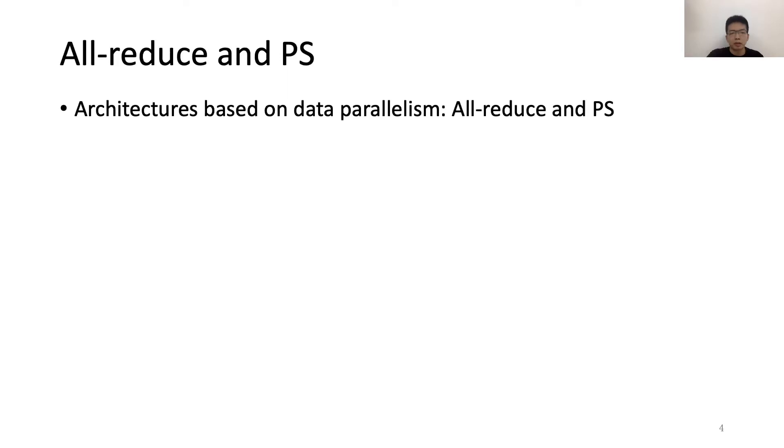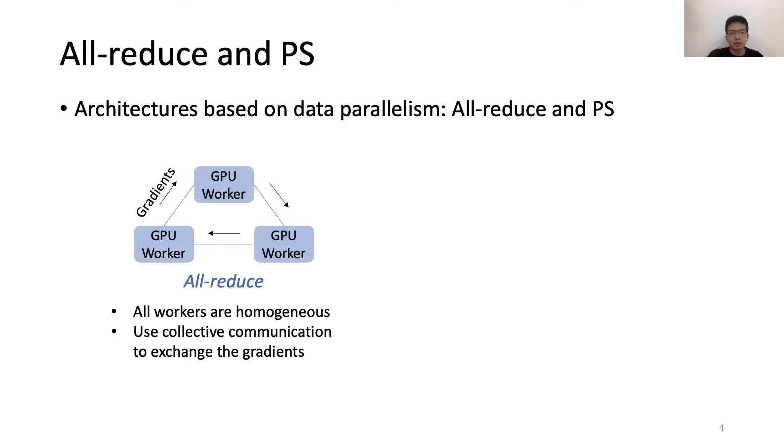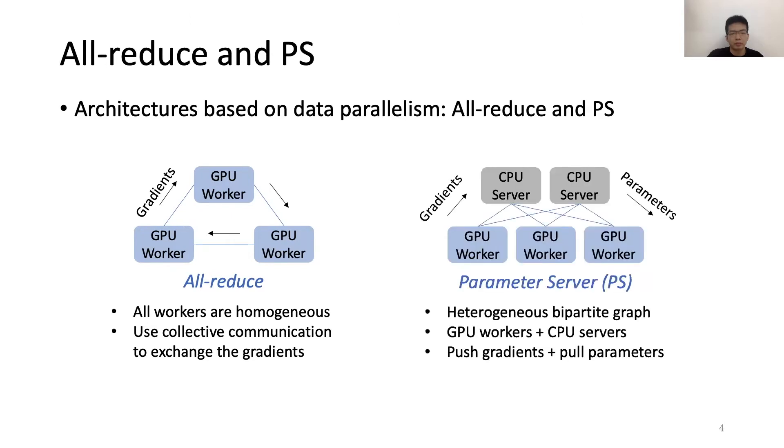There are two architectures based on data parallelism, all-reduce and PS. For all-reduce, all workers are homogeneous, and they use collective communication to exchange the gradients with each other. For parameter server, the architecture is a heterogeneous bipartite graph where the GPU workers and CPU servers connect with each other. In the communication stage, the GPU workers push their gradients to the CPU server and then pull the latest parameters back.